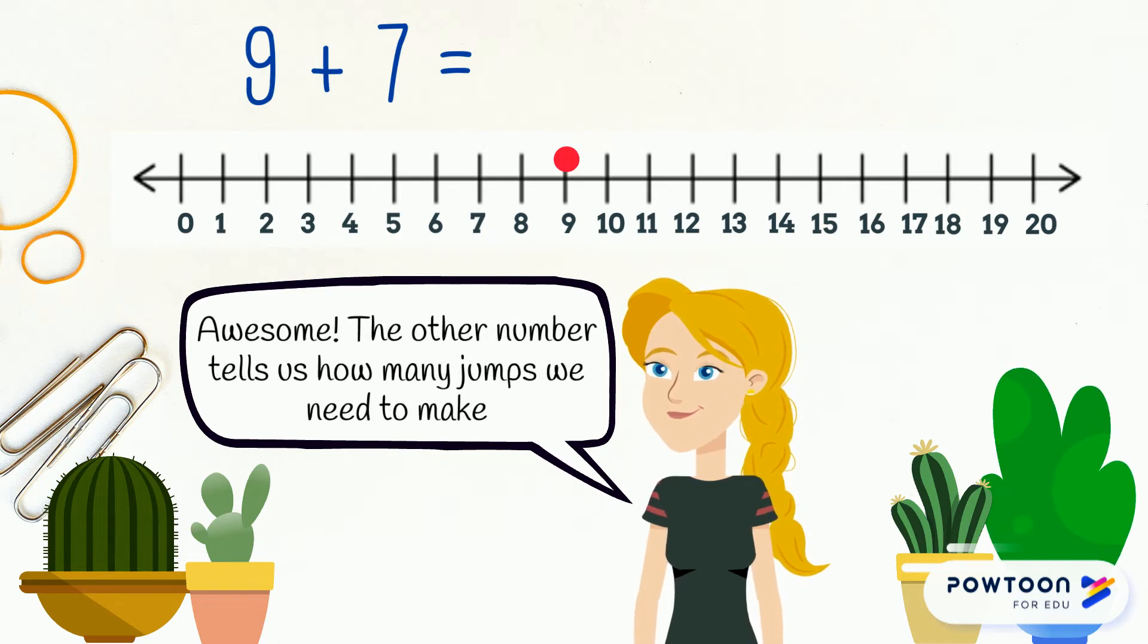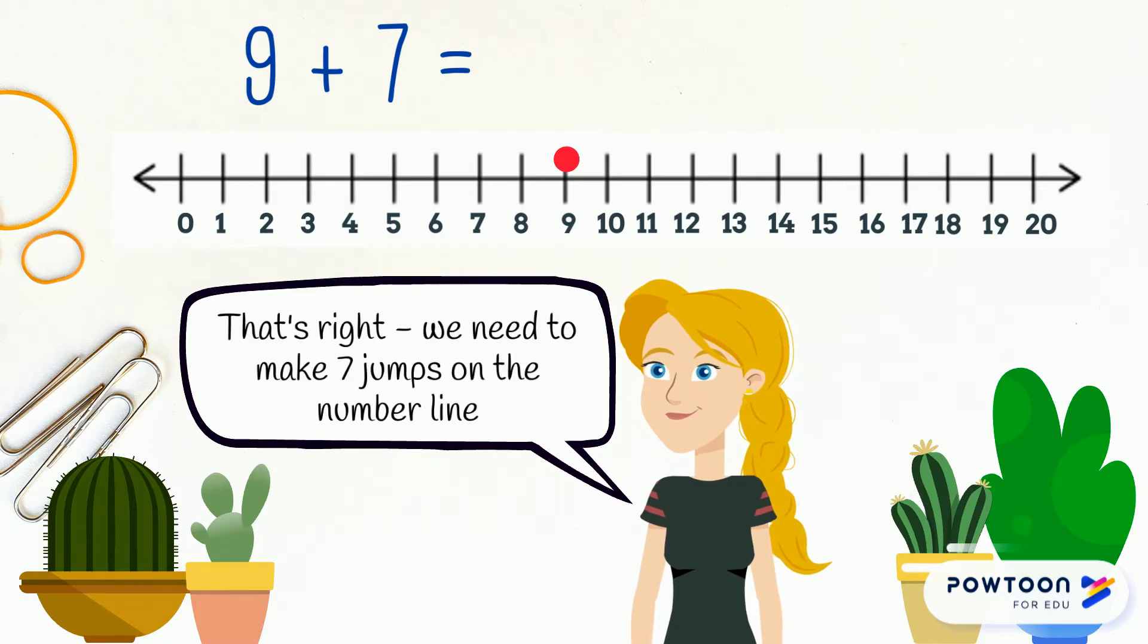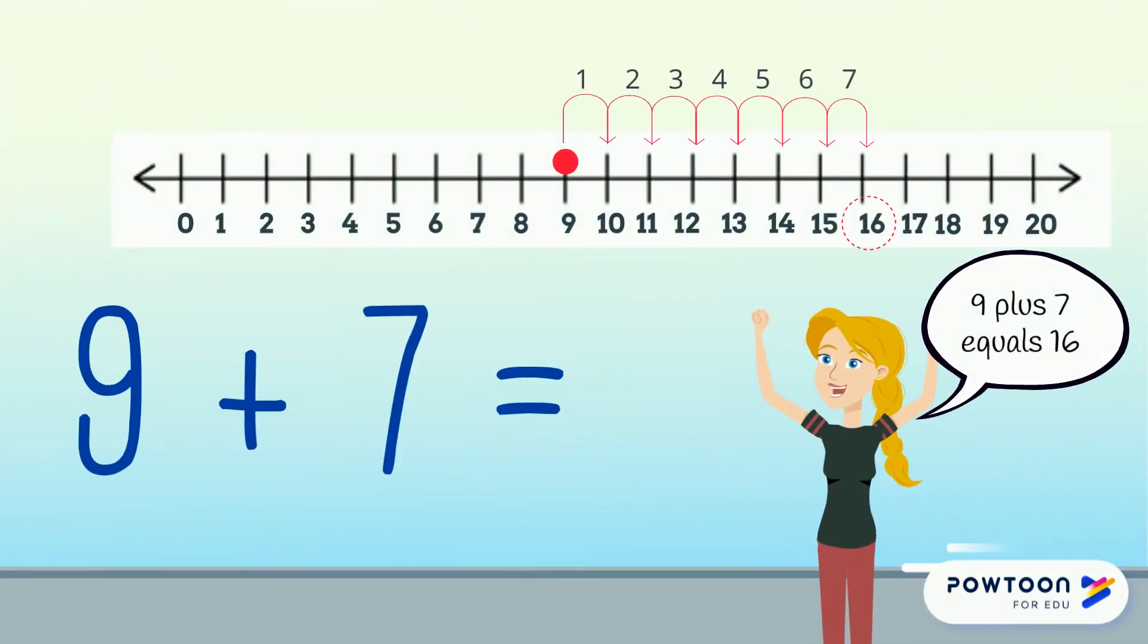The other number tells us how many jumps we need to make. That's right. We need to make 7 jumps on the number line. 9 plus 7. So 9 and 7 jumps equals 16. Well done.